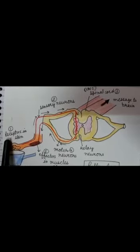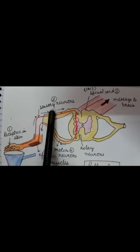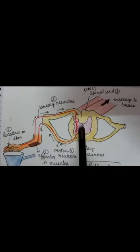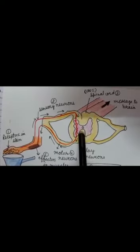Here is the function of each component. Receptors — such as eyes, ears, hands, and skin — receive the stimulus to initiate the nerve impulse. Sensory neurons transmit the impulse from receptors to the central nervous system, that is the brain or spinal cord.